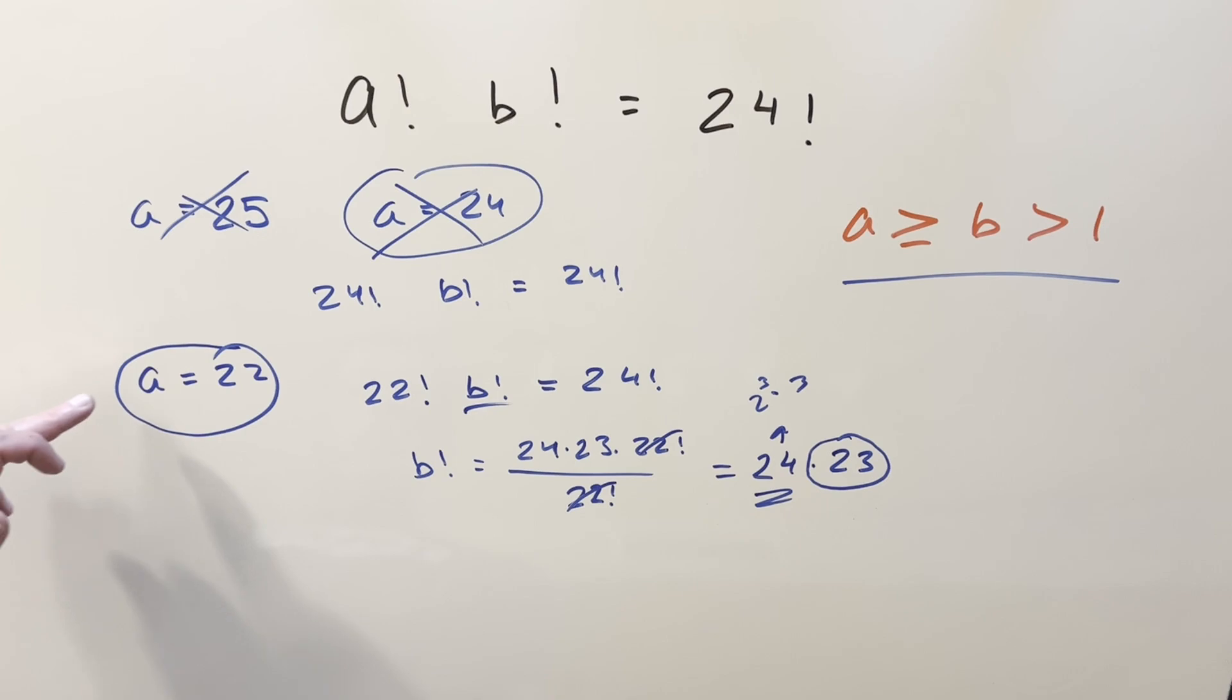So of course we keep going and go through a bunch of different examples going all the way down to like a equals 2 or something. Although of course it's going to become ridiculous at a certain point because then you start having the case where b is greater than a. But really what we want to do is get back to, let's look at a equals 23 now.